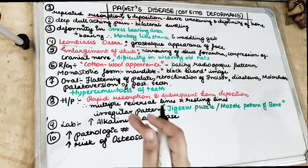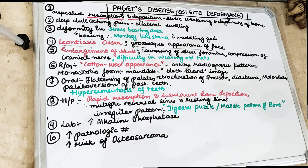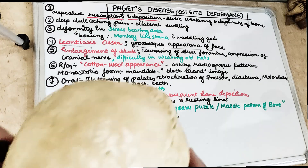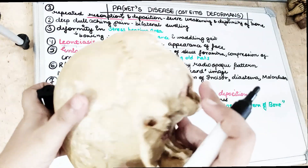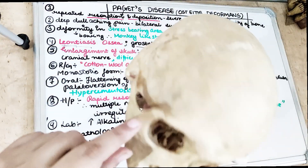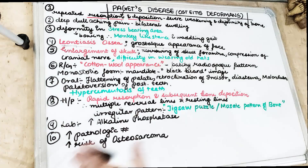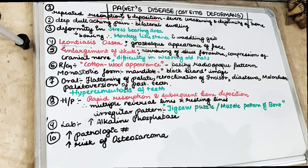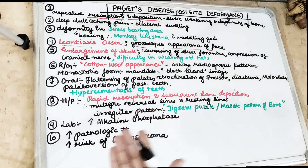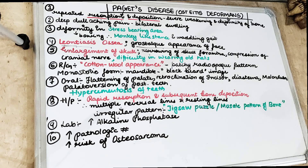Because there is enlargement of the skull, all the foramens get closed. Due to that, there is compression of the cranial nerves, which can lead to facial paralysis, blindness, headache, and deafness. All these things the patient often complains of as a result of skull enlargement. There is also difficulty in wearing the old hat.